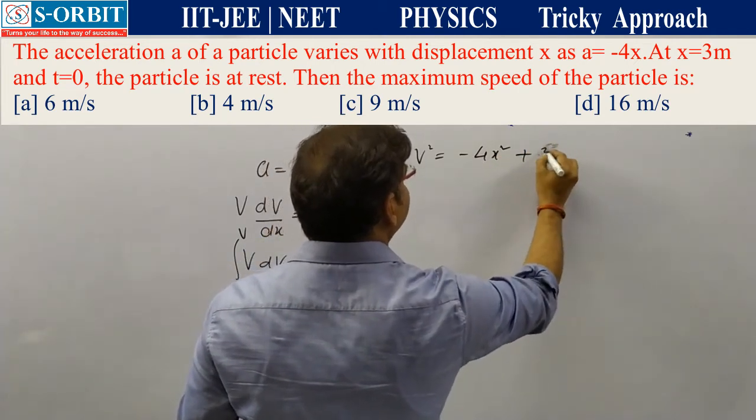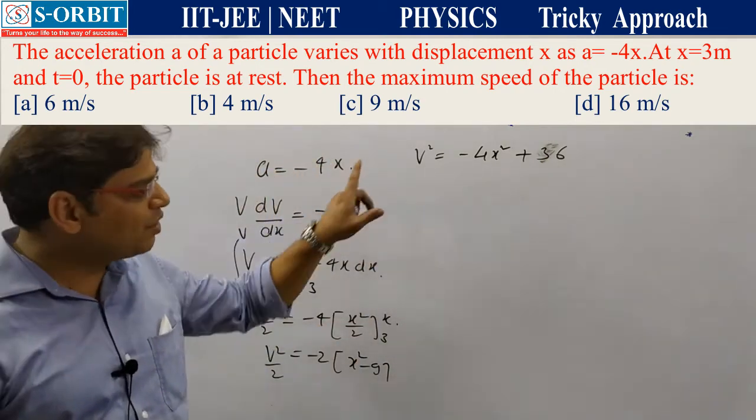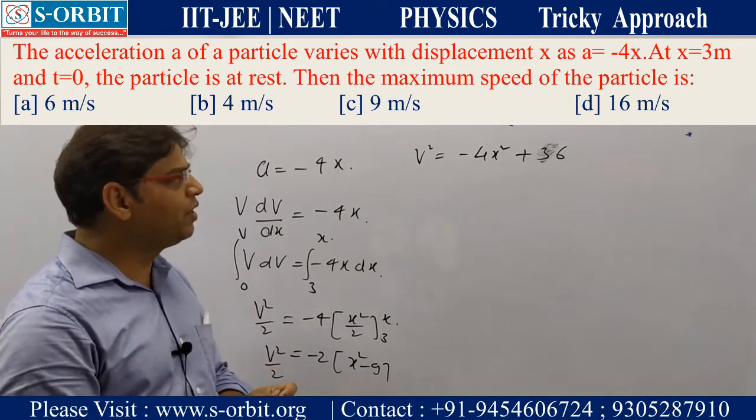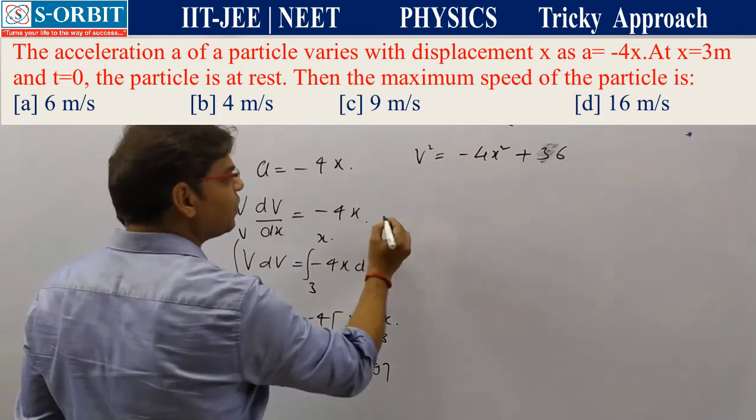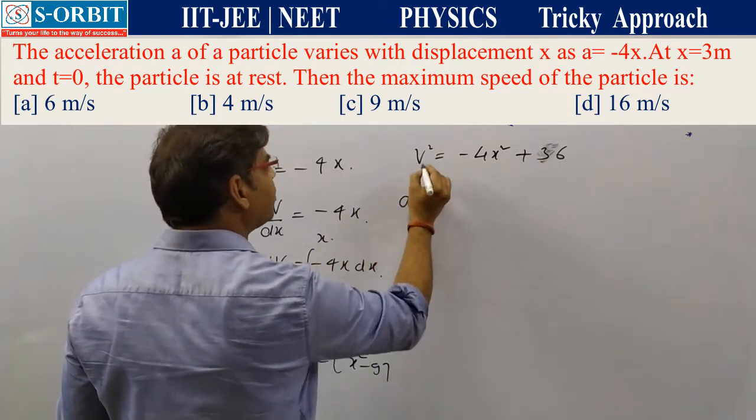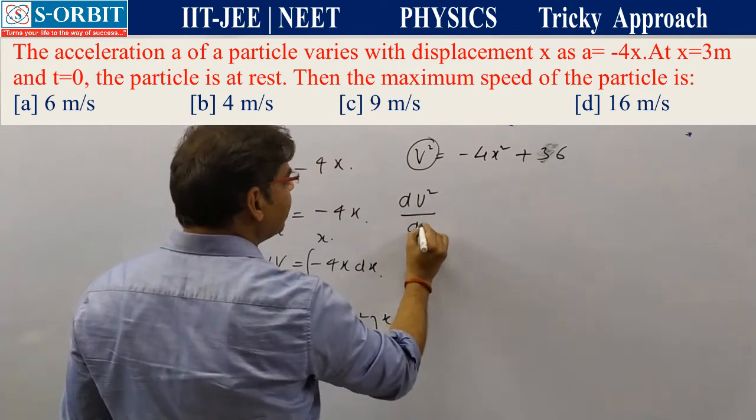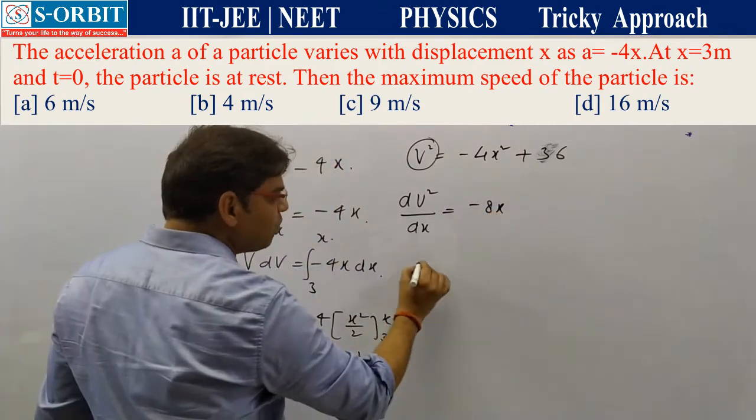For maximum speed, we differentiate. Taking dv²/dx = -8x = 0.